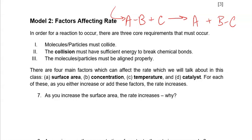The analogy that seems to stick really well is thinking about the requirements for a chemical reaction in terms of trying to knock somebody out — whether we're talking about professional boxing, MMA, or just really wanting to punch someone. In order to knock somebody out, you must have a collision — you must punch them.